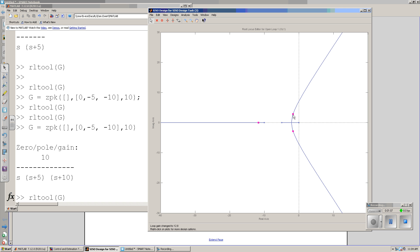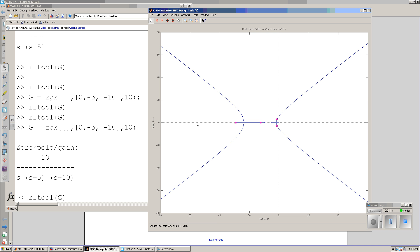What rltool is also kind of useful for is it shows off how poles and zeros affect the root-locus plot. Suppose I add a pole right there. Poles repel root-locus plots, zeros attract.